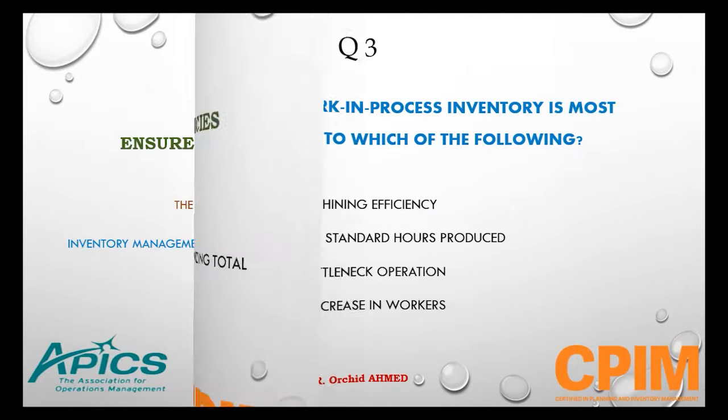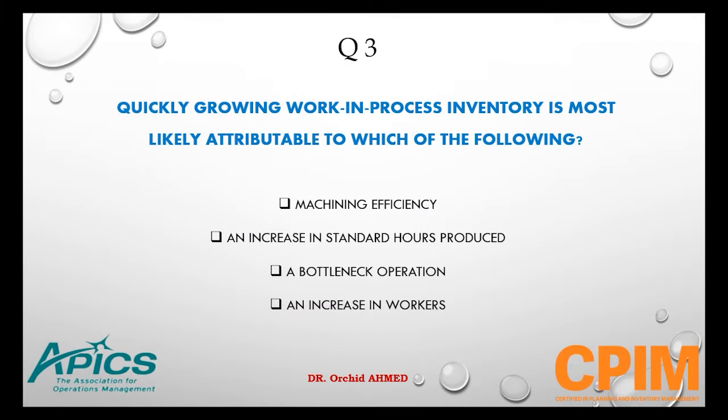Question number 3. Quickly growing work-in-process inventory is most likely attributable to which of the following? Options: machining efficiency, an increase in standard hours produced, a bottleneck operation, or an increase in workers.